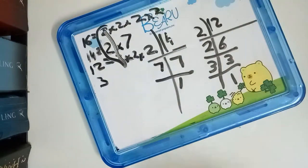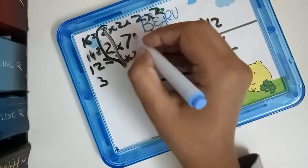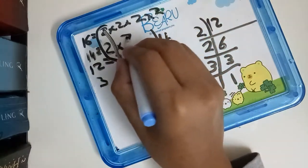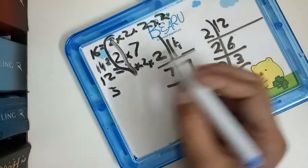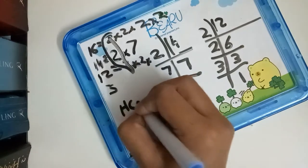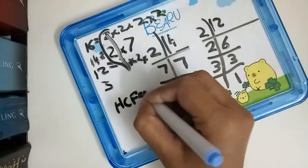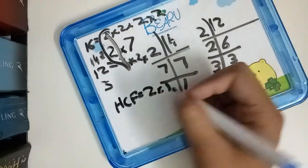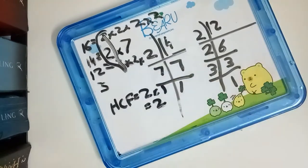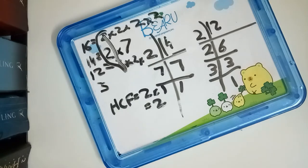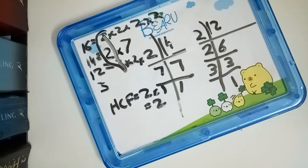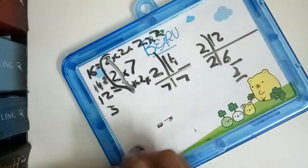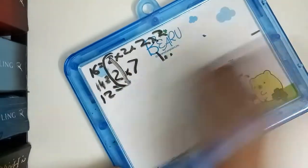There is no more in common because 14 has a 7 and none of the others have 7. So the HCF is equal to 2. And that is how you find the HCF of numbers using the prime factorization method.